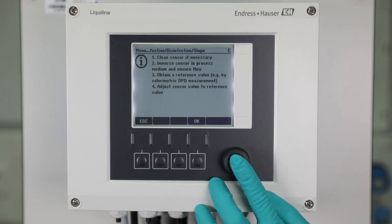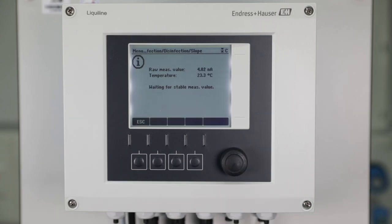The transmitter checks that the stability criteria are fulfilled and stores the present value for later adjustment. Continue with the next step in the calibration menu.